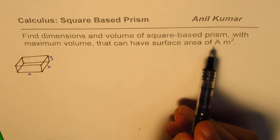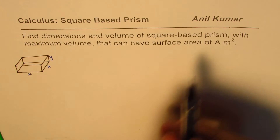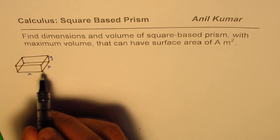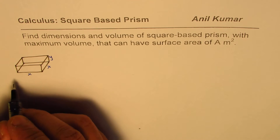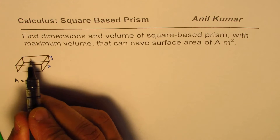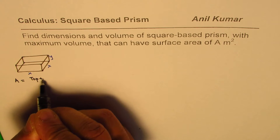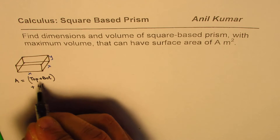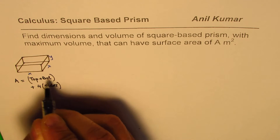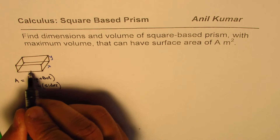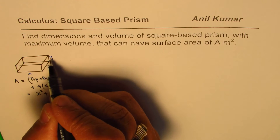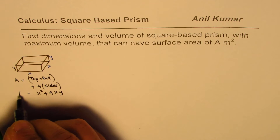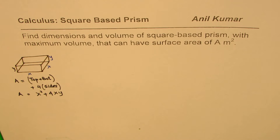Once we have the surface area, it helps us relate x and y, the two variables we are working with. The surface area for a prism — assuming all sides are closed — gives us six sides. The area A equals the area of top and bottom plus the area of the four sides. Area of top and bottom is 2x², and there are four sides each with area x times y, so we get: 2x² + 4xy = A.